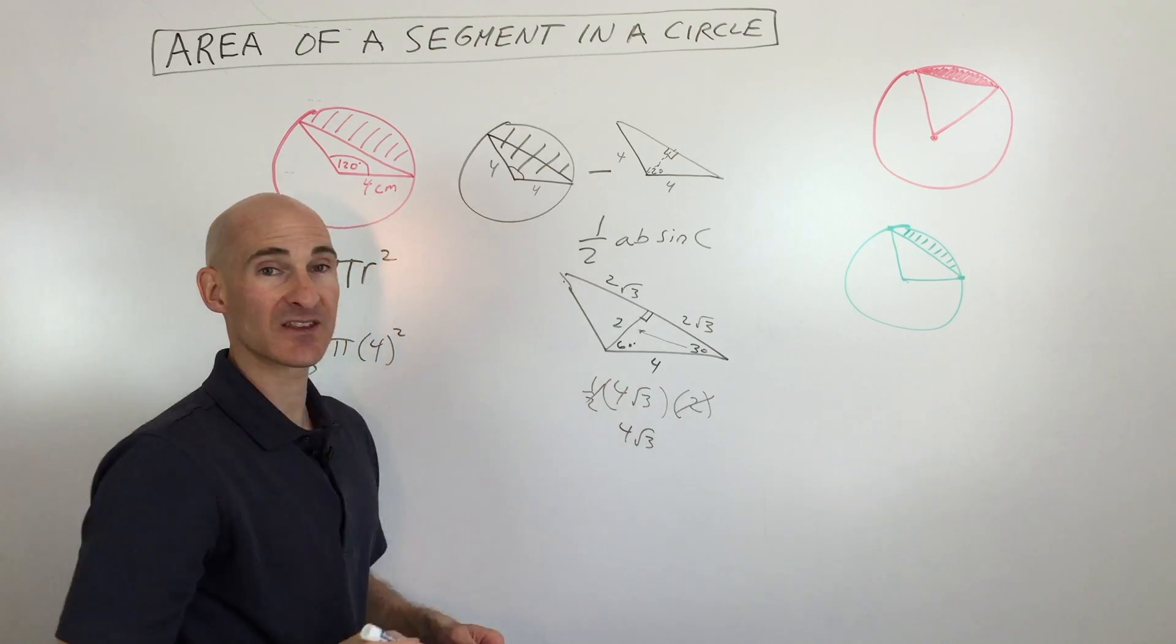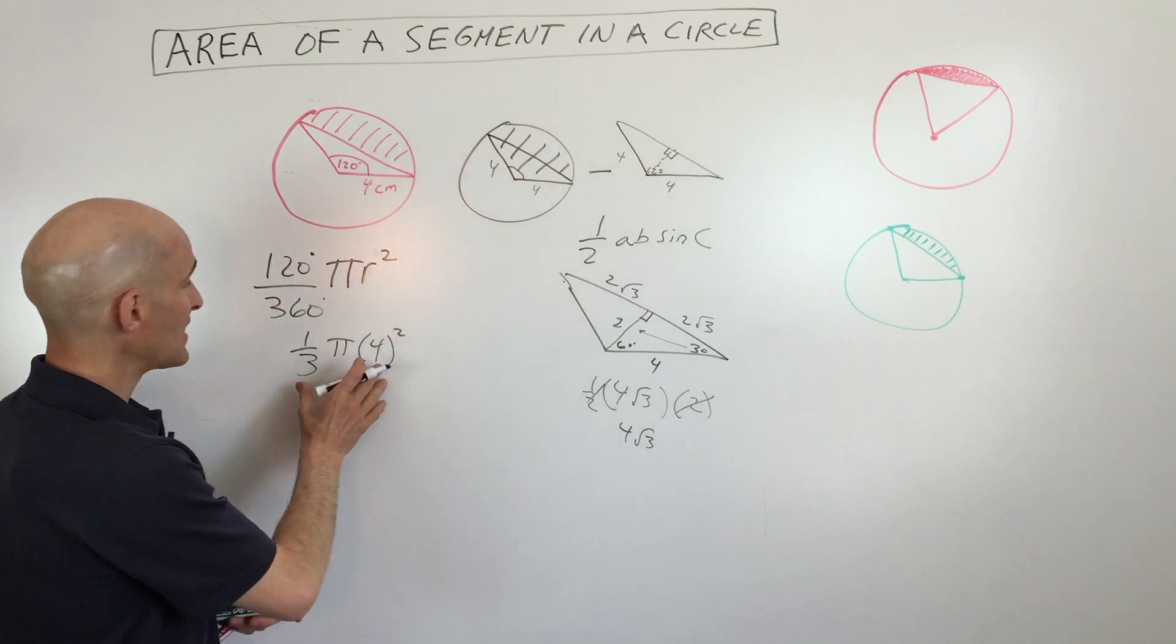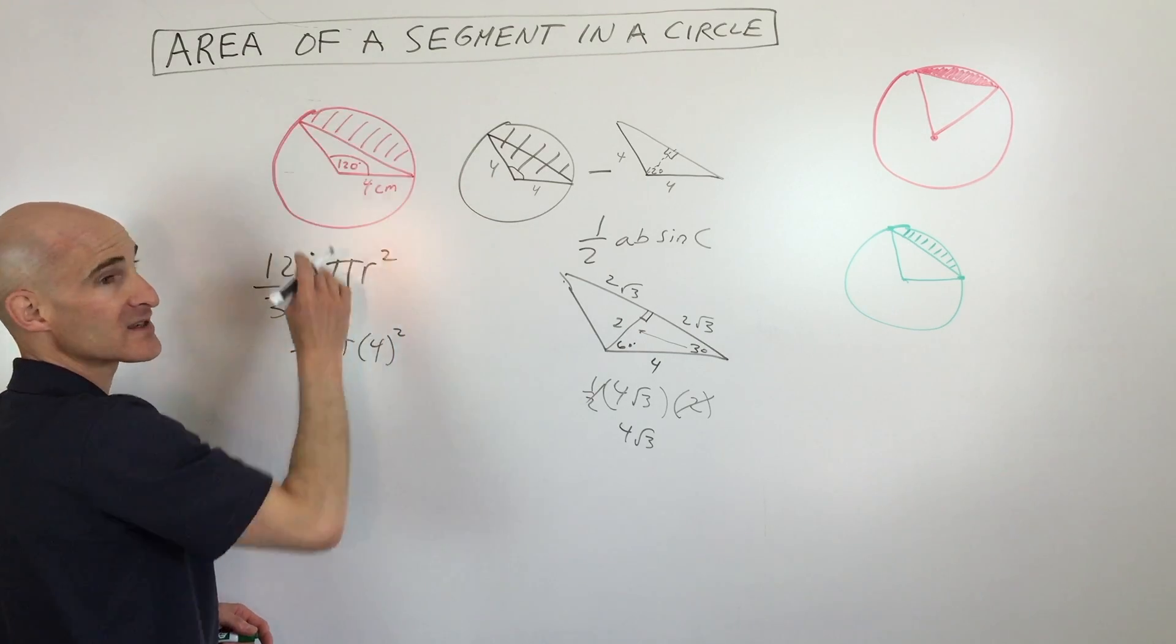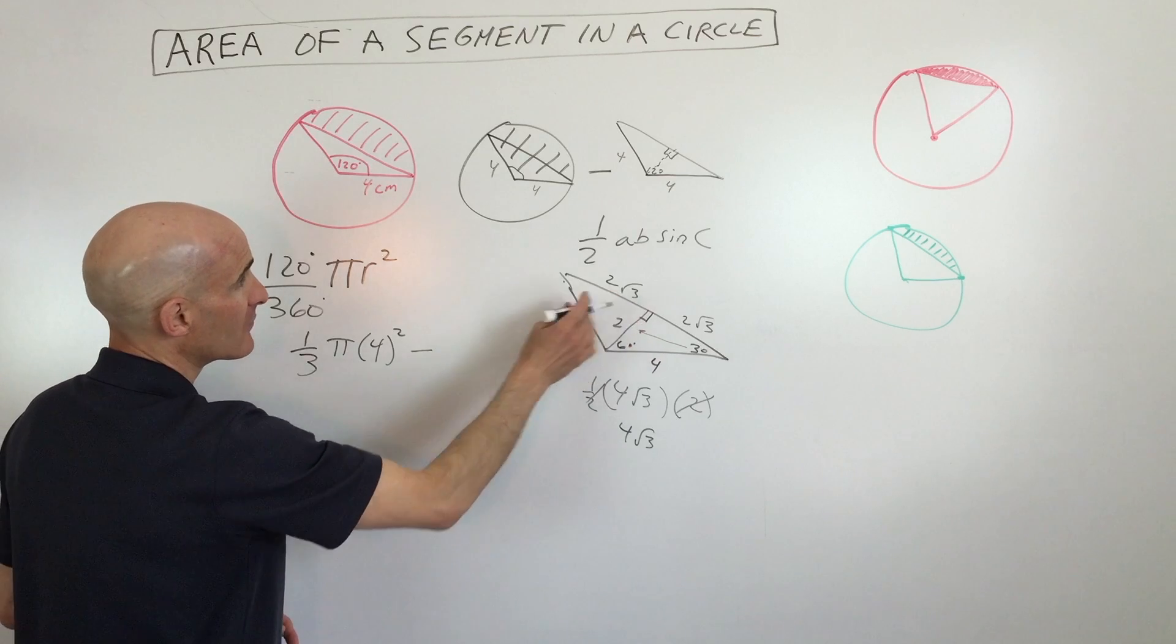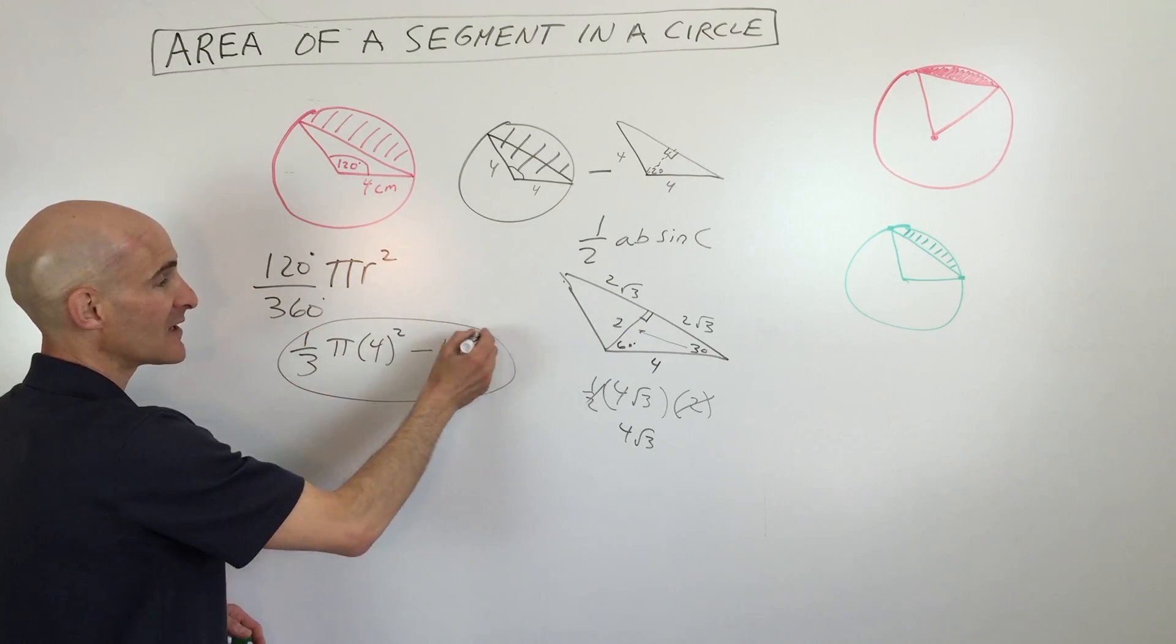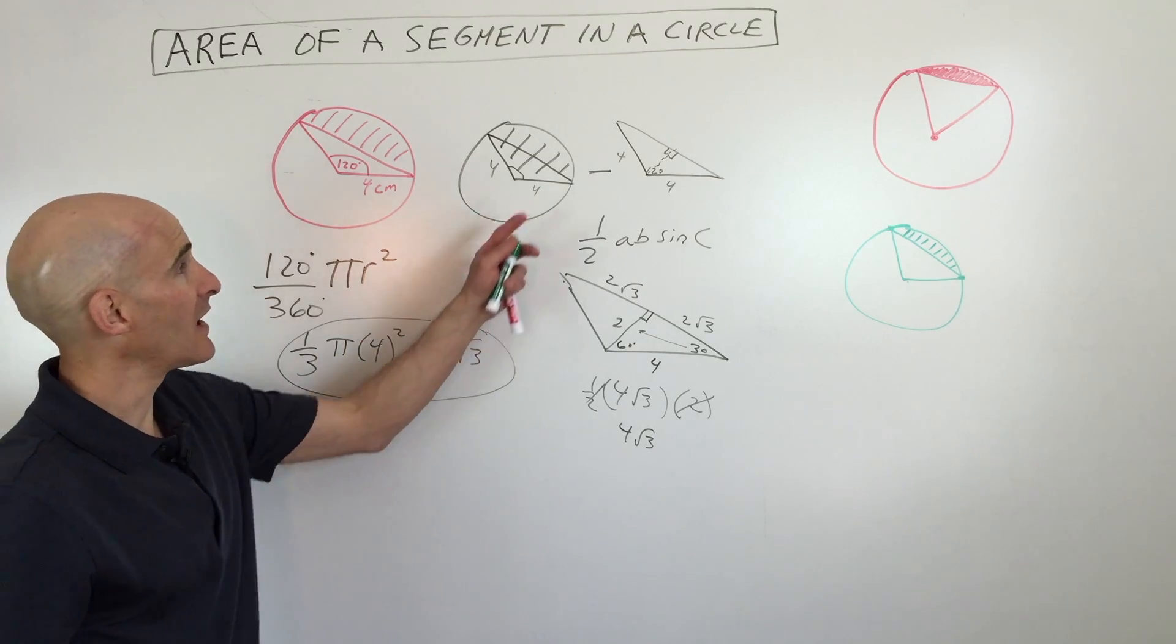All we have to do now is take this, the area of the sector—this whole pie slice—minus the area of the triangle, which is 4 square root of 3. That's going to give you an exact answer, that's going to give us the area of the segment, just this little piece right here.